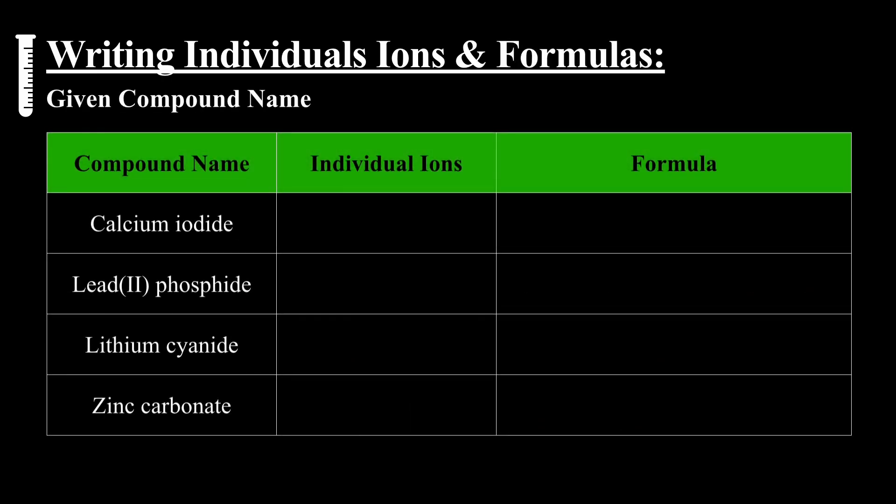Last thing, I'm going to give you the compound name, we're going to go to the individual ions, and then the formula. Calcium iodide. Calcium, we know the charge, group two, plus two charge. Iodine, group 17, minus one charge. So when I cross over, the calcium plus two goes on the I, and the one from the iodine goes on the calcium, which we don't write, so CaI2.